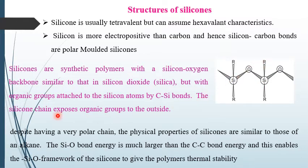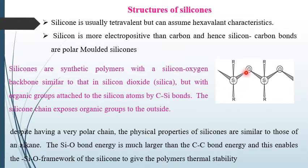The silicone chain exposes organic groups to the outside. Despite having a polar chain, the physical properties of silicones are similar to those of an alkane. The silicon-oxygen bond energy is much larger than carbon-carbon bond energy, and this enables the silicon-oxygen framework of the silicone to give the polymer thermal stability.